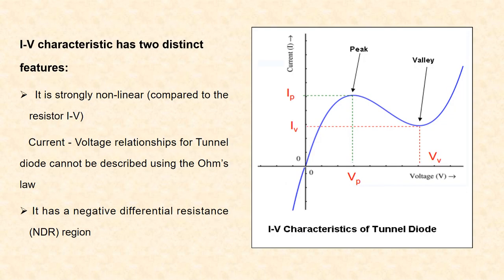The I-V characteristics of tunnel diode has two distinct features. First, it is strongly nonlinear compared to the I-V characteristics of a resistor — that is, the current-voltage relationship for tunnel diode cannot be described using Ohm's law. The second one is, it has a negative differential resistance region. That is, in this region, as we increase the voltage, the current decreases.